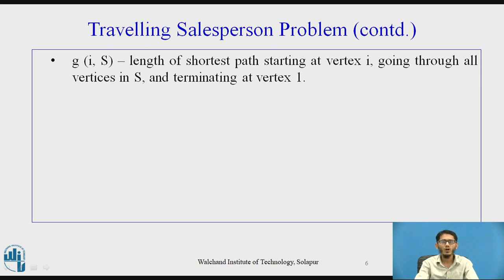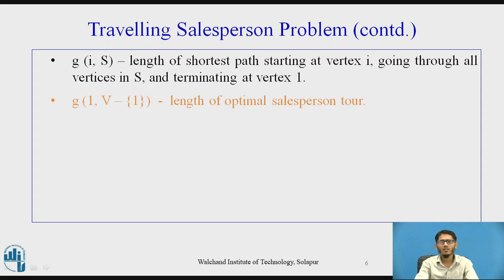Now g(i, S) is the length of the shortest path that starts at vertex i, goes through all the vertices in the set S, and terminates at vertex 1. In this Traveling Salesperson Problem, our main aim is to find the value of g(1, V minus {1}), which is the length of the optimal salesperson tour.